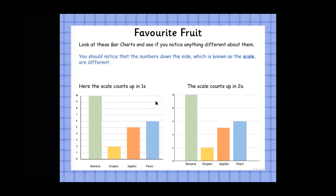Well, let's take apples as an example. We have 5 apples in total. On the scale going up in twos, we've got 4 and 6, and 5 would sit in between them. We don't need to draw it or anything — we just need to make sure our bar chart lines up directly in between 4 and 6. In the same way, if we had 9, we would make sure our bar sits directly between 8 and 10.